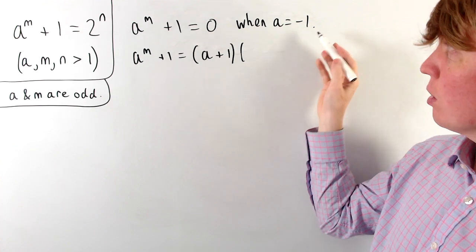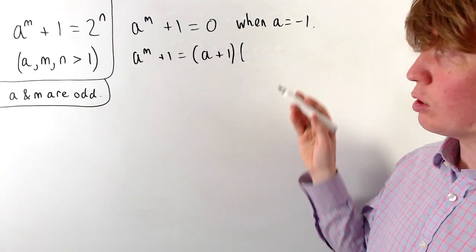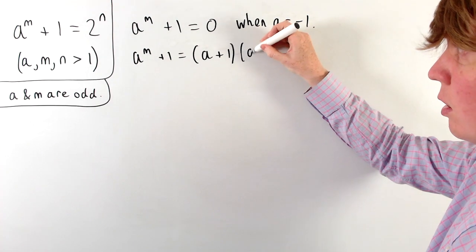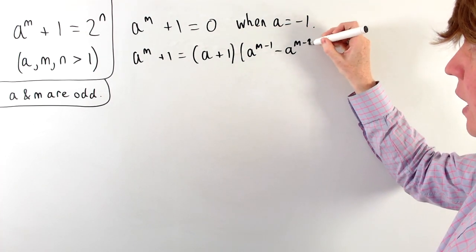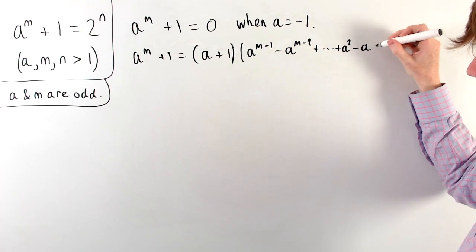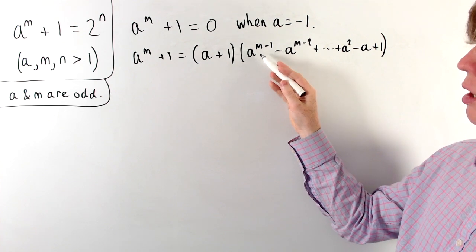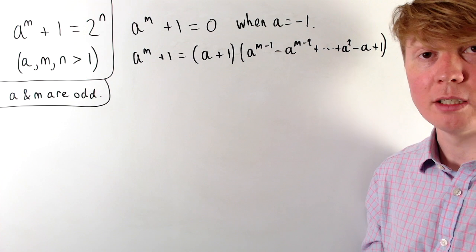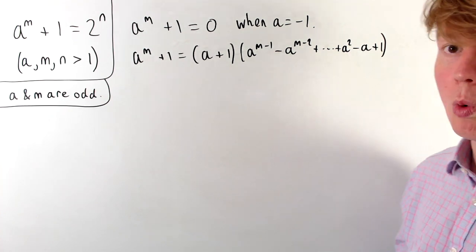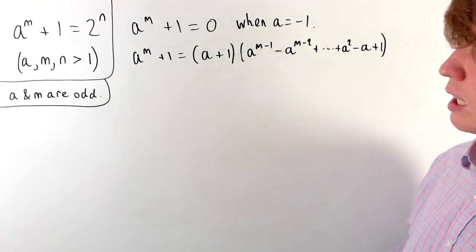We need to find the remaining factor. Using polynomial division or the partial sum formula for a geometric sequence, we get a to the m minus 1 minus a to the m minus 2, and so on — this alternating sequence of powers all the way down to a squared minus a plus 1. Because m is odd, the even powers (m minus 1, m minus 3, ...) are positive terms and the odd powers (m minus 2, m minus 4, ...) are negative terms, giving us this consistent factorisation regardless of m.